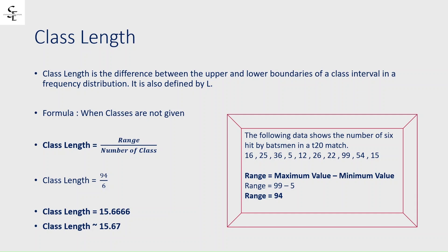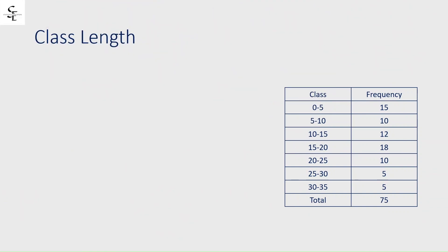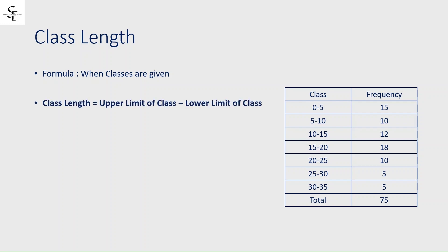The approximate value of the class length is 15.67. When the classes are given, the formula is: class length = upper limit of the class − lower limit of the class. For class 20 to 25, the upper limit is 25 and the lower limit is 20, so class length = 25 − 20 = 5.